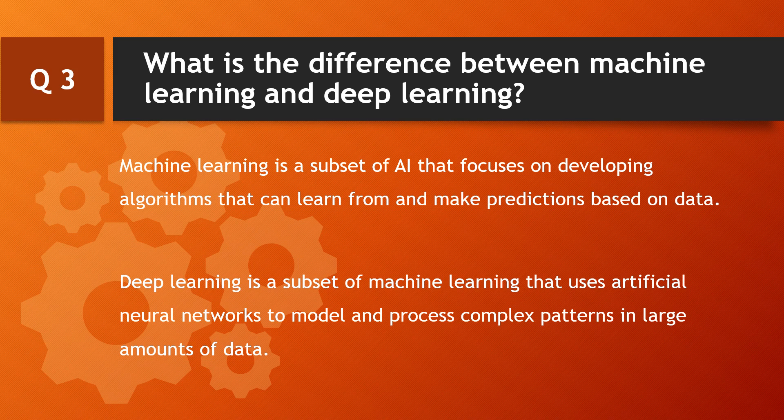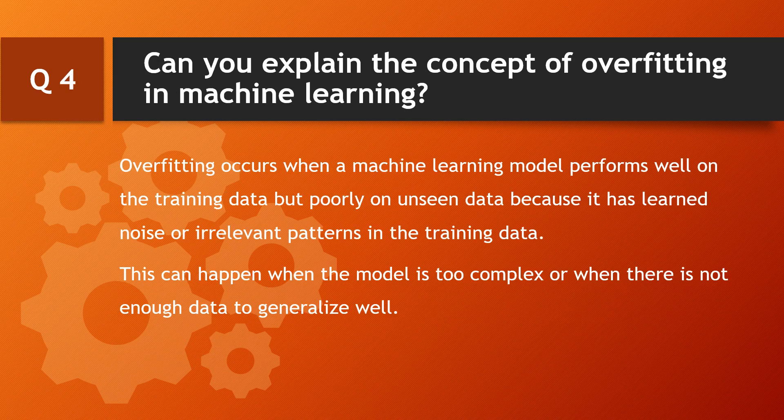Third question: what is the difference between machine learning and deep learning? Machine learning is a subset of AI that focuses on developing algorithms that can learn from and make predictions based on data. Deep learning is a subset of machine learning that uses artificial neural networks to model and process complex patterns in large amounts of data.